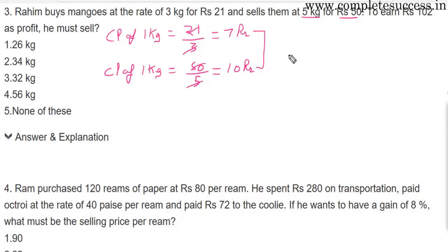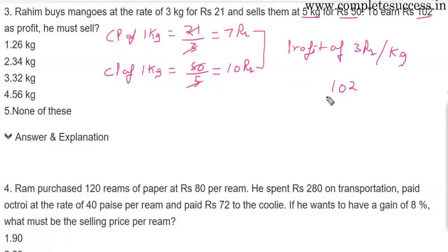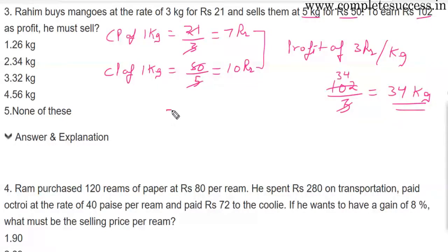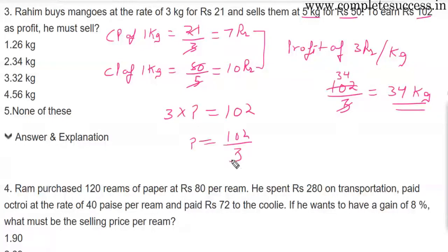So overall, there is a profit of Rs.3 per kg. Raheem wants to earn Rs.102 as total profit. Dividing 102 by 3 gives 34. So he must sell 34 kg, because he earns Rs.3 per kg profit. The answer is the second option.